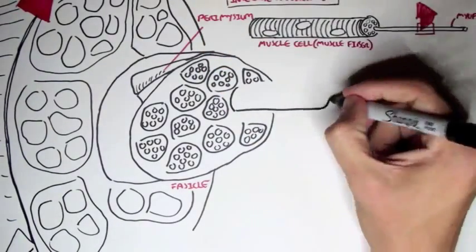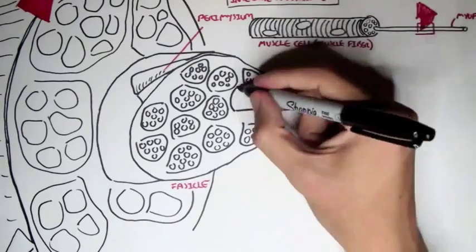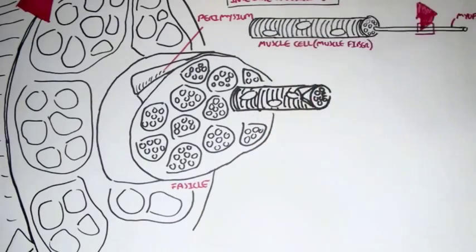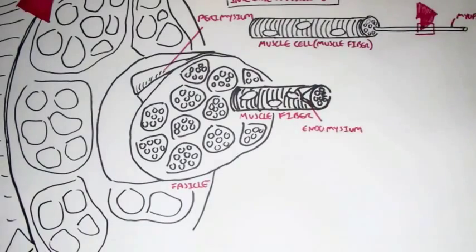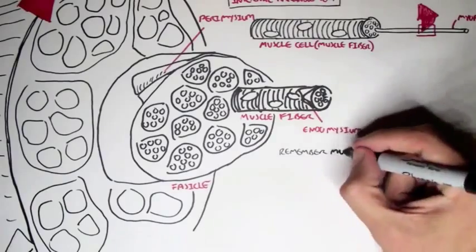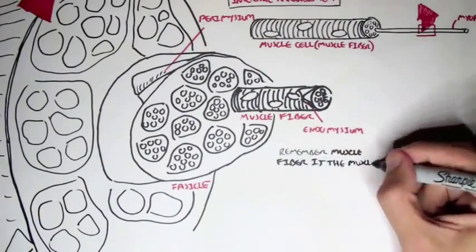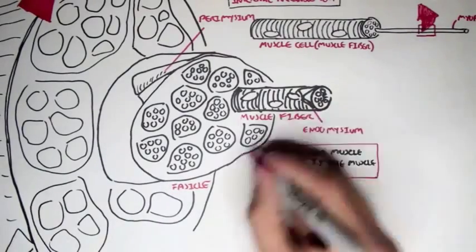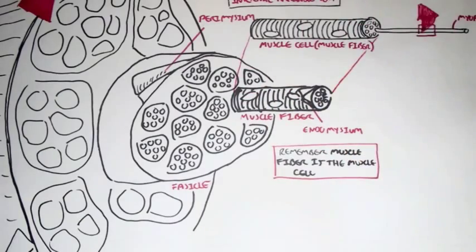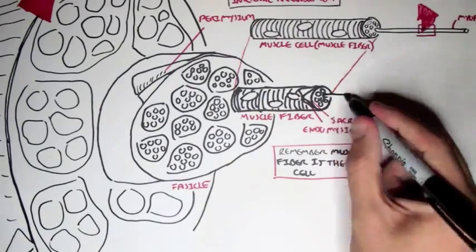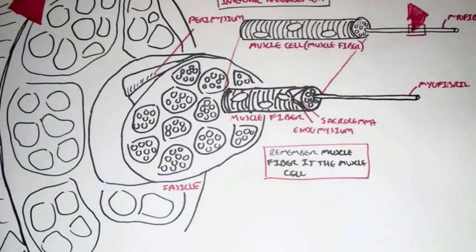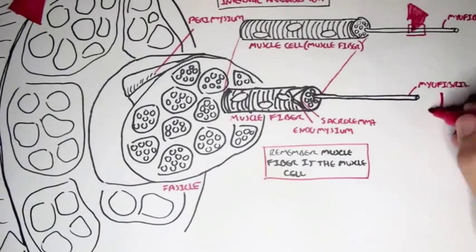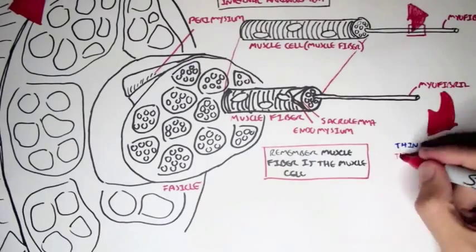If we pull out one of these other internal structures of this fascicle, this is where our muscle fiber is. The muscle fiber contains a connective tissue wrapping around it known as the endomysium. Remember that a muscle fiber is the muscle cell. The muscle fiber, the muscle cell, also contains a membrane known as the sarcolemma. And if we take one of the internal structures of the muscle fiber, we have a myofibril, which contains the thin filaments and the thick filaments.